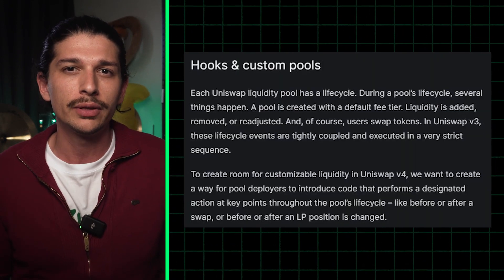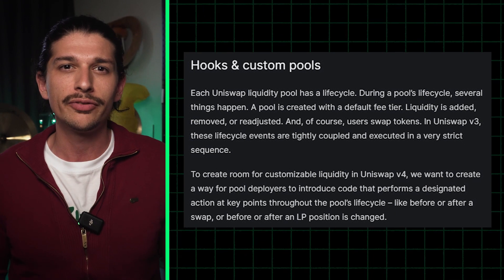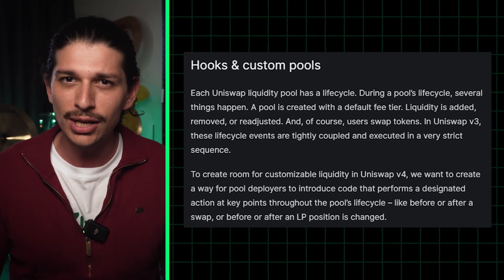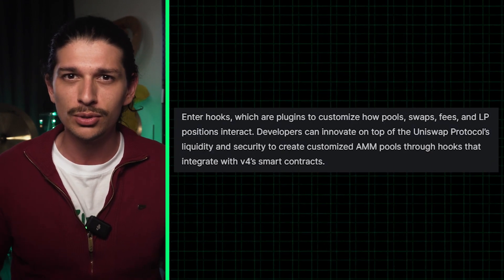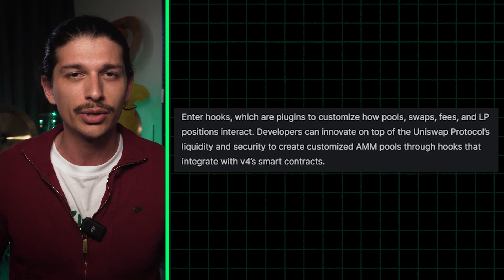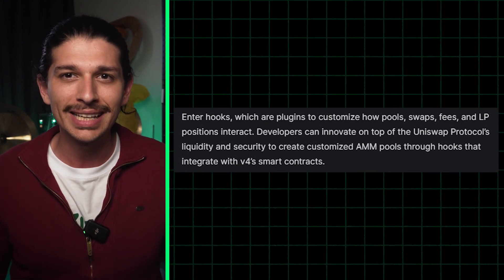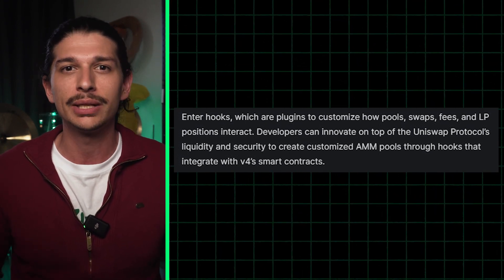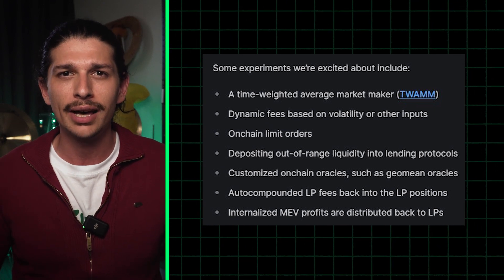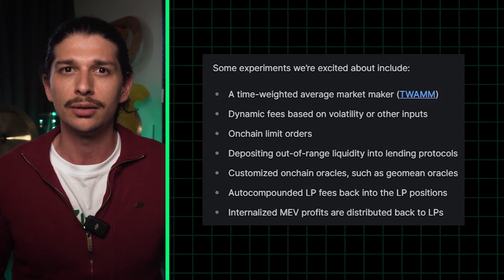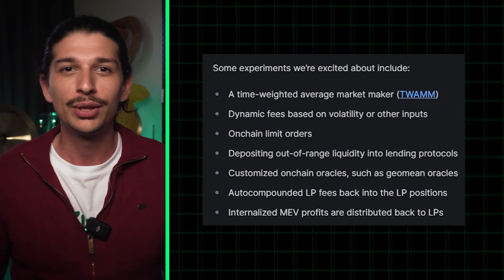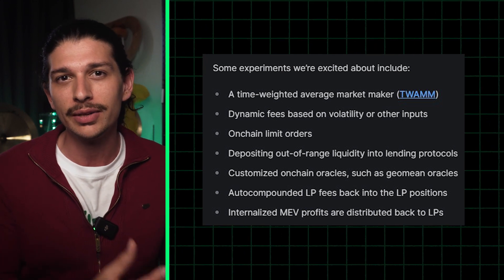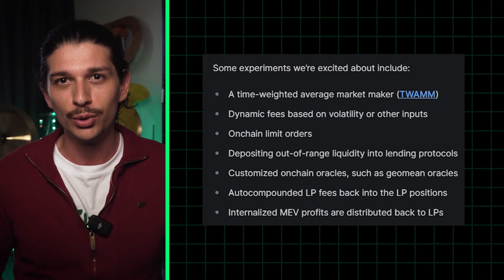This enables a new level of customization for managing liquidity pools. And if you're wondering what this actually means for users, it's quite straightforward. With hooks, you can implement dynamic fees, set up on-chain limit orders, and even build a time-weighted average market maker, or TWAM. With hooks, it's even possible to automate the compounding of liquidity pool rewards.